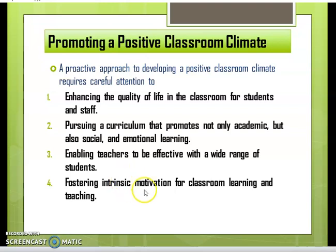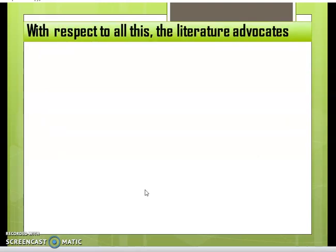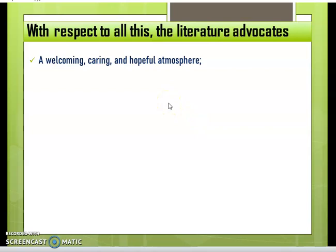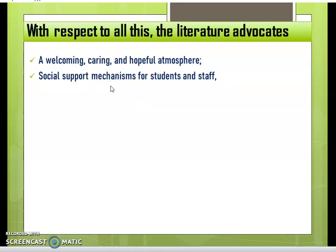The fourth element is fostering intrinsic motivation for classroom learning and teaching — promoting students and teachers to understand the importance of intrinsic motivation. The literature also advocates that, in order to create a positive classroom climate, the school or classroom should have a welcoming, caring, and hopeful atmosphere where a child feels welcome, cared for, and has a sense of belongingness. There should also be a social support mechanism for students and staff.